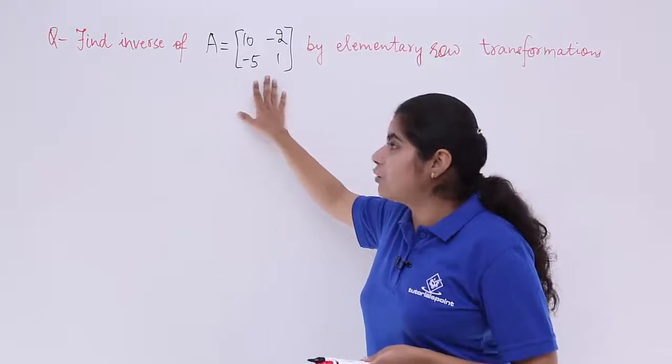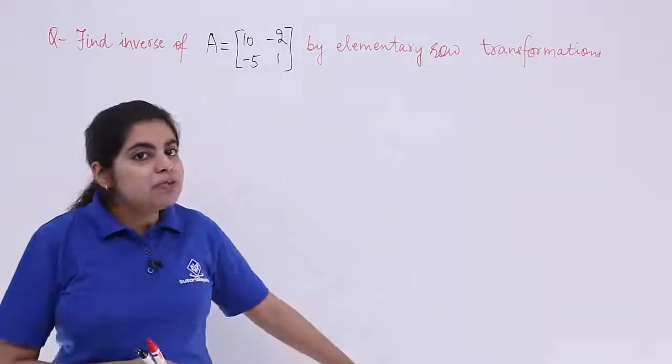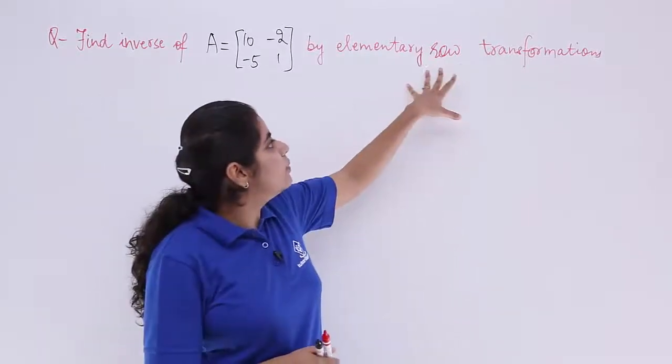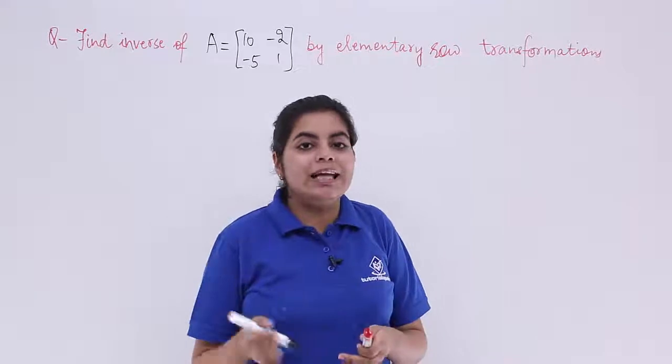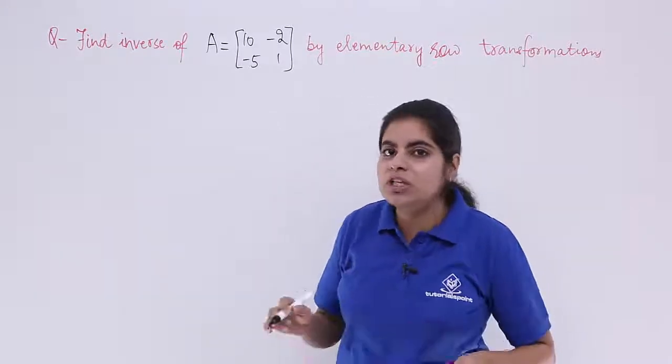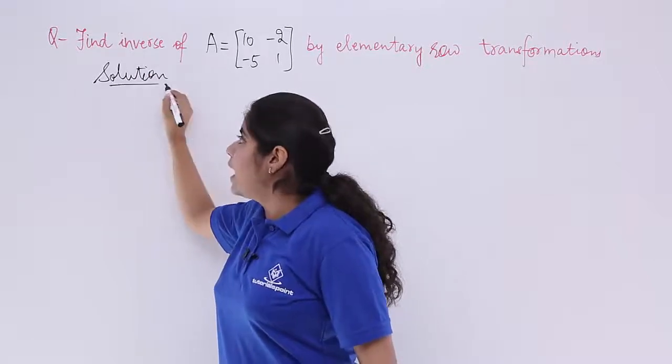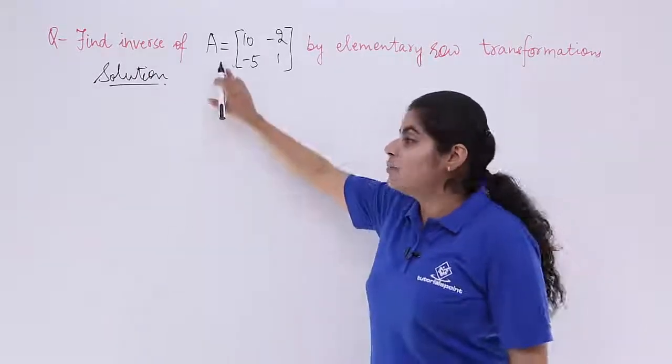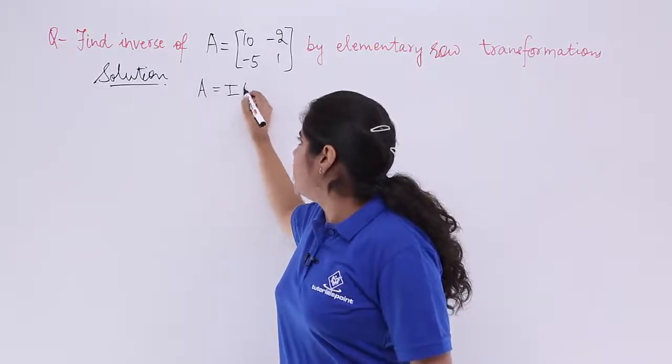The question is find the inverse of a matrix A and that matrix is given to me and we need to find the inverse by elementary row transformations. It is already told that use row transformations so you cannot use column ones. Let's write the heading as solution and I know the matrix is named as A. So it will be A is equal to I A.